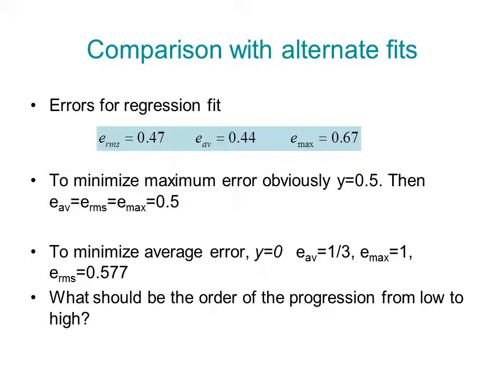So instead of doing an RMS fit, we could do other fits like minimizing the maximum error or minimizing the absolute average error. Let's look at the comparison for the fit that we just did. The RMS error is 0.47, the average error is 0.44, and the maximal error is 0.67. If we wanted to minimize the maximum error, since we have only two values of the function, one and zero, obviously we want to have a fit y equals 0.5. Then all the errors are equal to 0.5. What we have done here is reduce the maximum error quite a bit from 0.67 to 0.5 and paid by increasing the RMS error a little bit and the average absolute error a little bit.